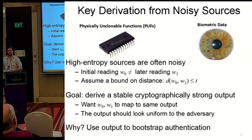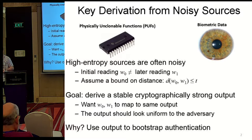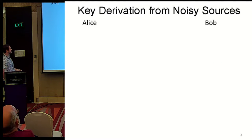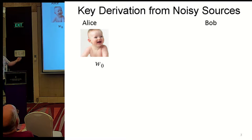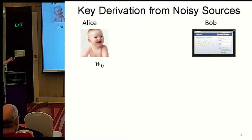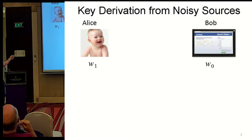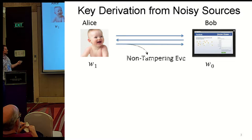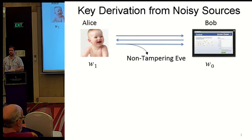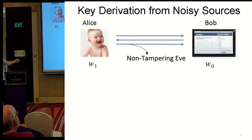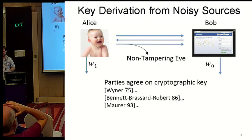What we want to do is get a cryptographically strong and stable output from these readings. W0 and W1 should map to the same output that should look uniform to the adversary. If we can do this, we can use it to bootstrap authentication. We have a baby who wants to use Facebook — it takes an initial reading W0 from its biometric data and sends this value to Facebook. At some later time, maybe when it's grown up, it takes a later reading W1. Alice and Bob want to agree on a cryptographic key despite a non-tampering Eve observing their communication.